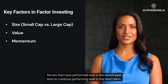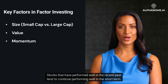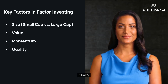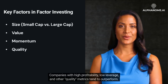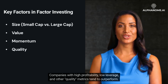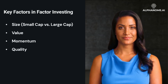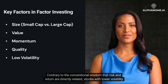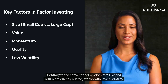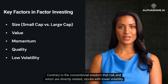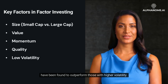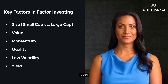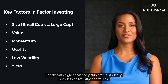Momentum: Stocks that have performed well in the recent past tend to continue performing well in the short term. Quality: Companies with high profitability, low leverage, and other quality metrics tend to outperform. Low Volatility: Contrary to the conventional wisdom that risk and return are directly related, stocks with lower volatility have been found to outperform those with higher volatility. Yield: Stocks with higher dividend yields have historically shown to deliver superior returns.